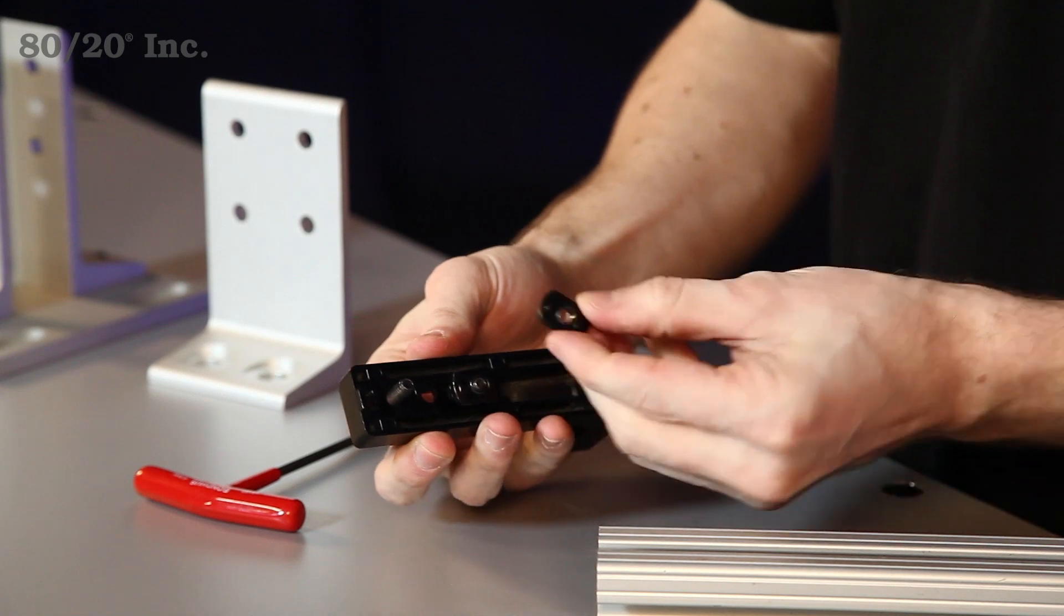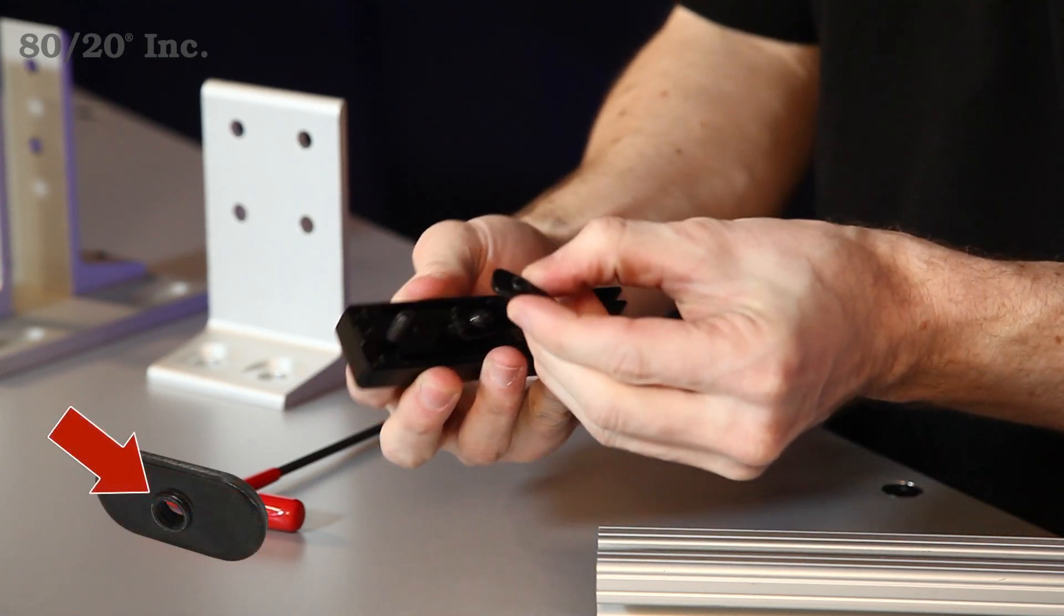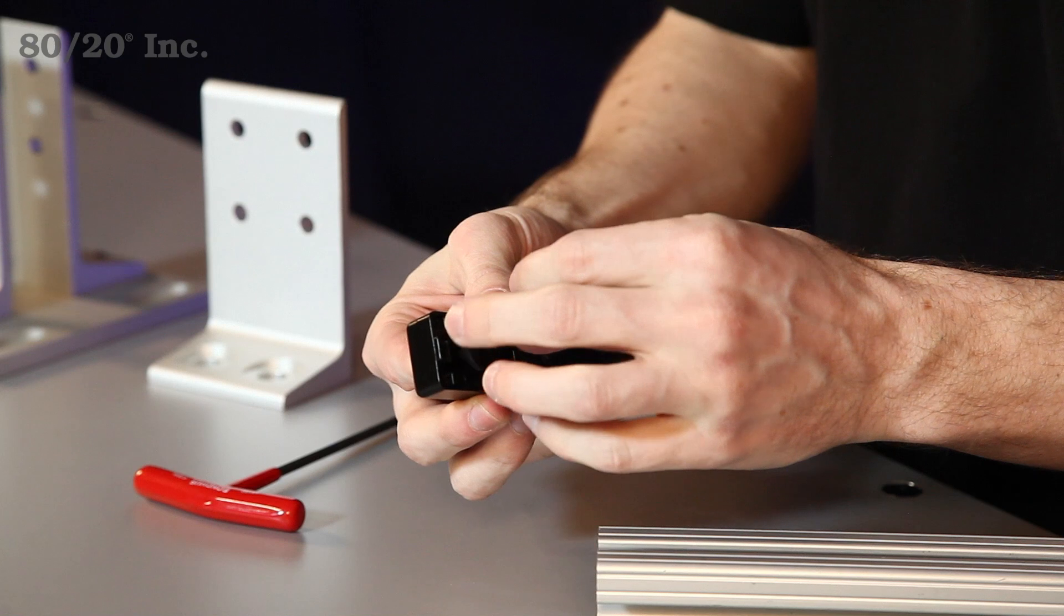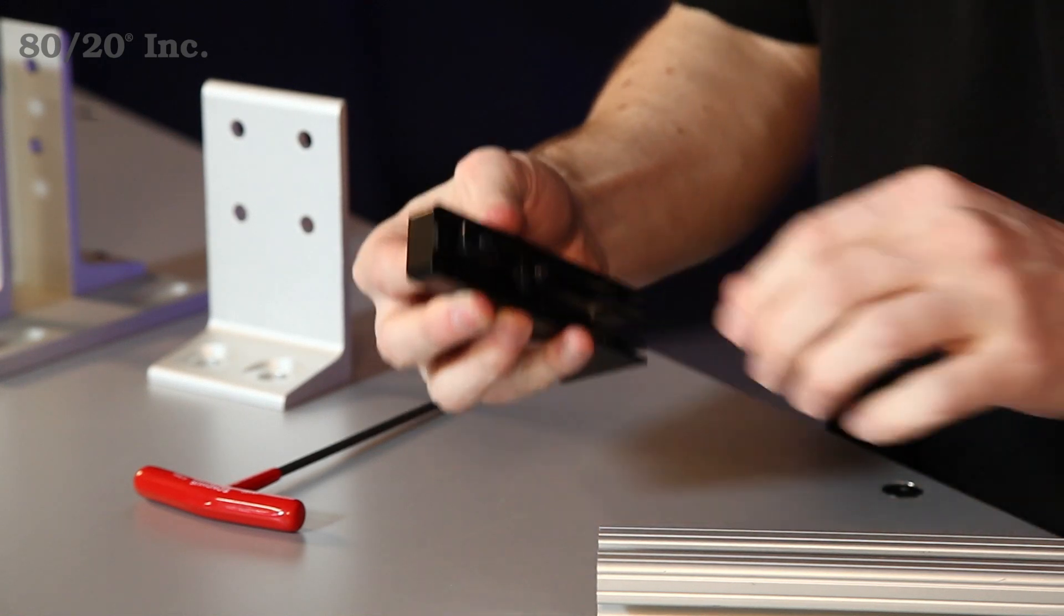Now you want to make sure with the T-nut, you have the pilot projection on it facing away from the bracket. So we'll just preload that onto the bolt there.